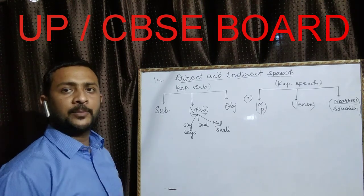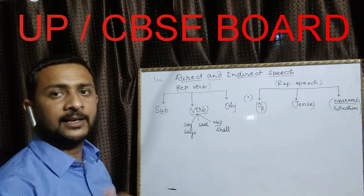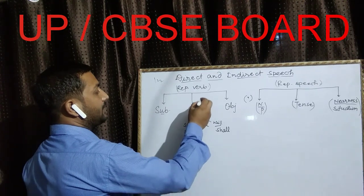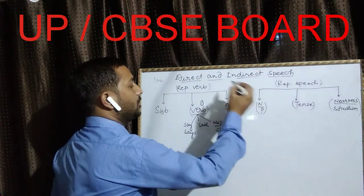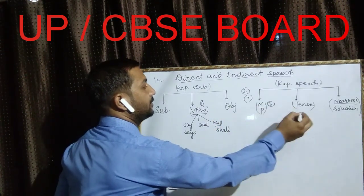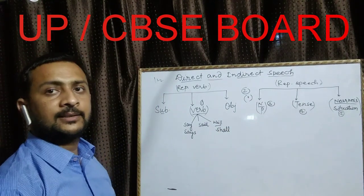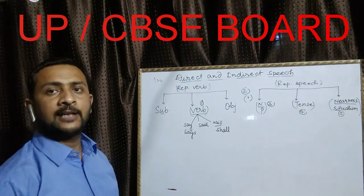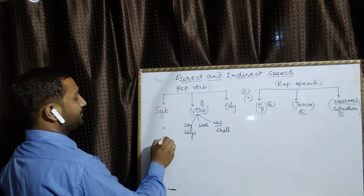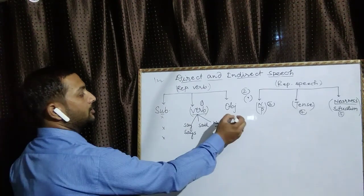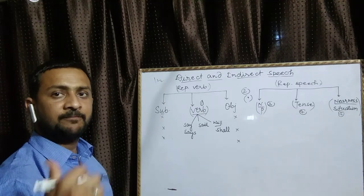आओ देखते हैं कि इस topic को change करने के लिए 5 important parts क्या हैं। सबसे पहले verb को change करते हैं, second comma, third, fourth, and fifth — ये पाँच चीज़ें Direct Indirect की अंतर्गत change की जाती हैं। इस part में subject और object को change नहीं करते हैं।